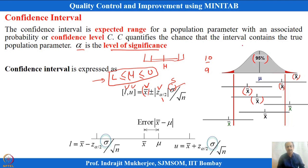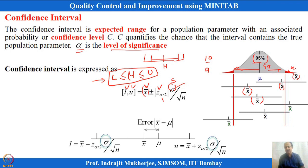Alpha is basically how much you can be wrong — the probability of committing an error. My estimation of the confidence interval can go wrong, and the percentage chance of that is defined by alpha. So the level of significance alpha represents the probability of going wrong.